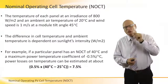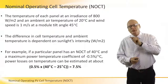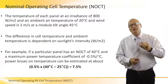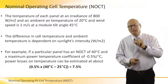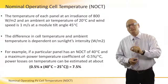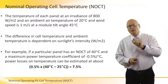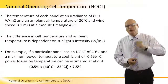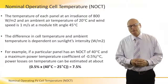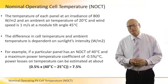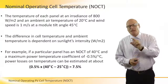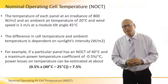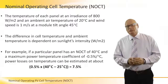This is because the NOCT was 40°C, and there is a half percent loss for each additional degree above 25°C. That's a very important parameter — 7.5% is a major loss.